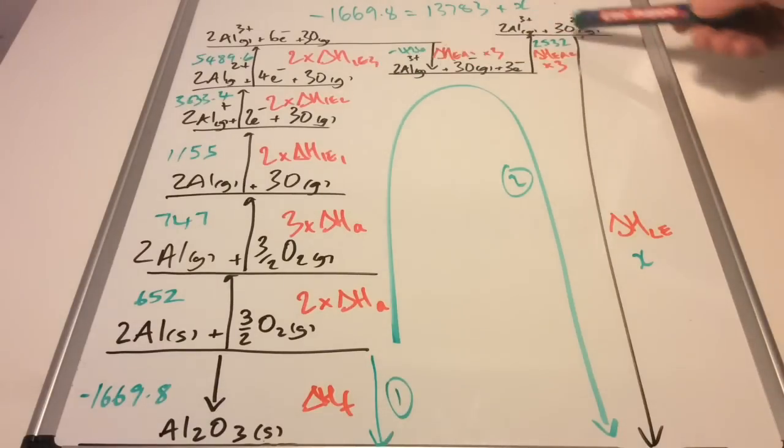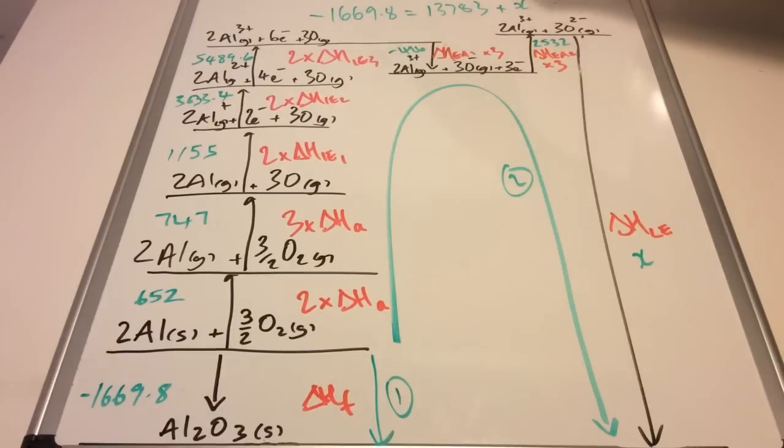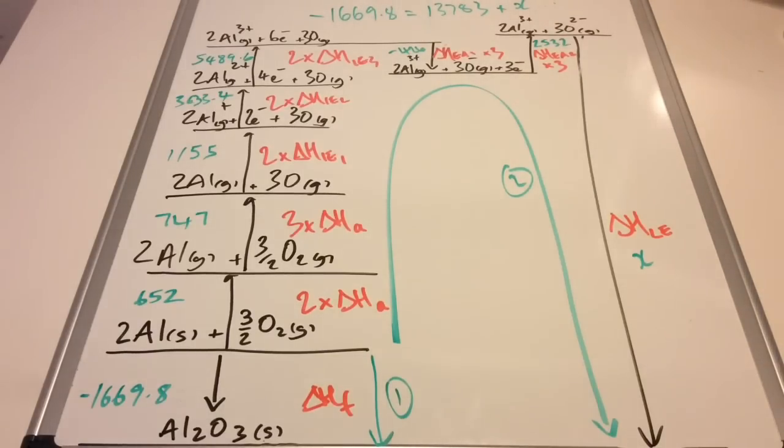For the last step, I'm going to take that over to there. Remember it's going to become minus, and we'll calculate the value for X. Using these values we get a value for X, for the lattice enthalpy for aluminium oxide, of -15,452.8 kilojoules per mole.